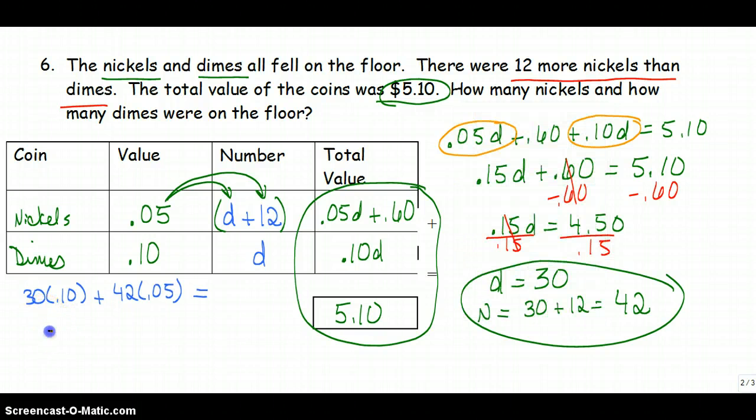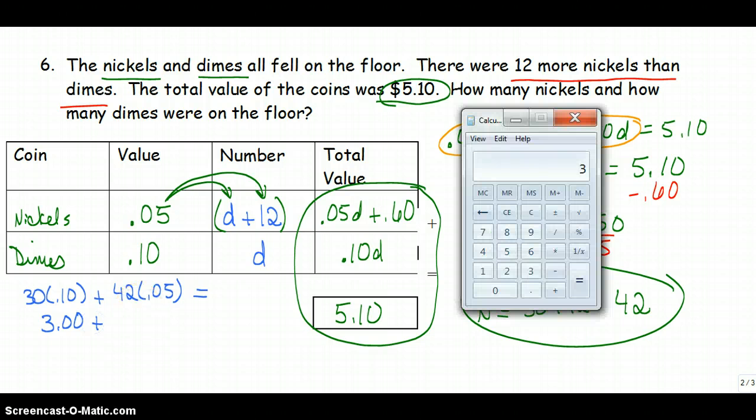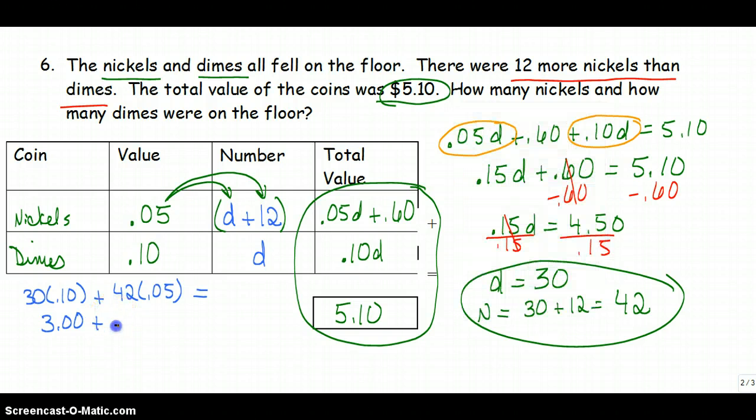Let's see what 42 times .05 is. 42 times .05, that is $2.10. So $3 plus $2.10 is equal to $5.10. I got exactly what I needed.